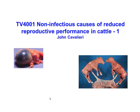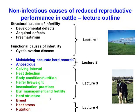We are going to begin a series about non-infectious causes of reduced reproductive performance in cattle. There are quite a few topics here that we will cover, split roughly into about four lectures. In the first lecture we will talk about structural causes of infertility, in particular developmental defects, acquired defects, and free martinism. Next we will move on to cystic ovarian disease, anestrus, and a variety of other factors that cause reduced reproductive performance in cattle.